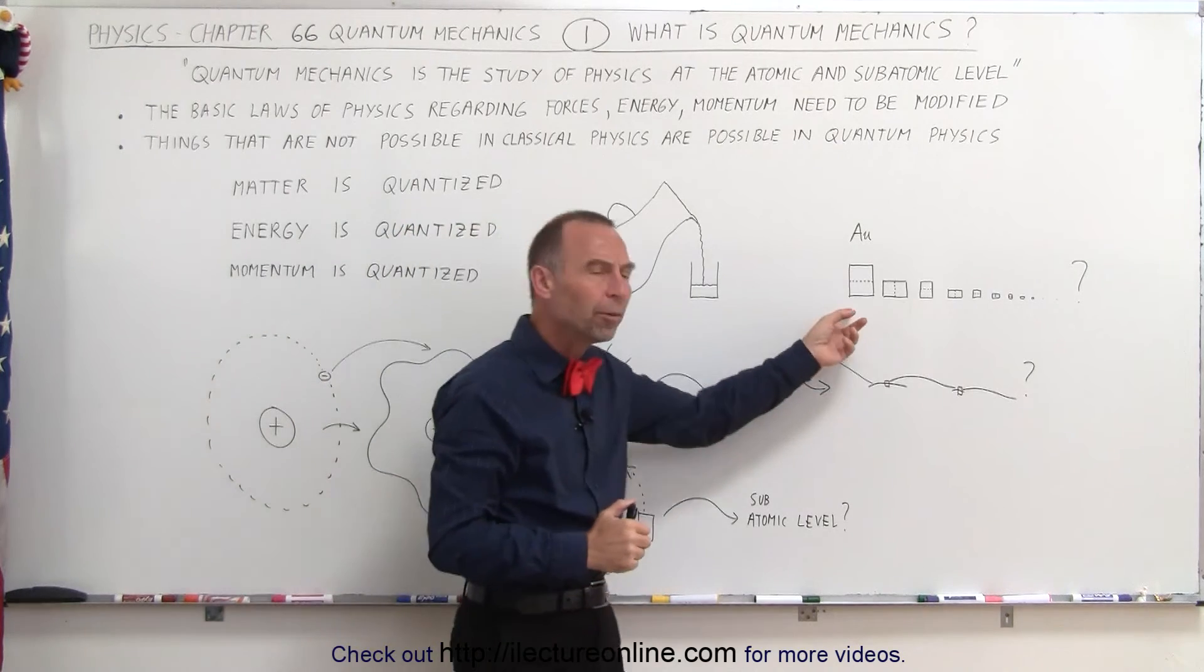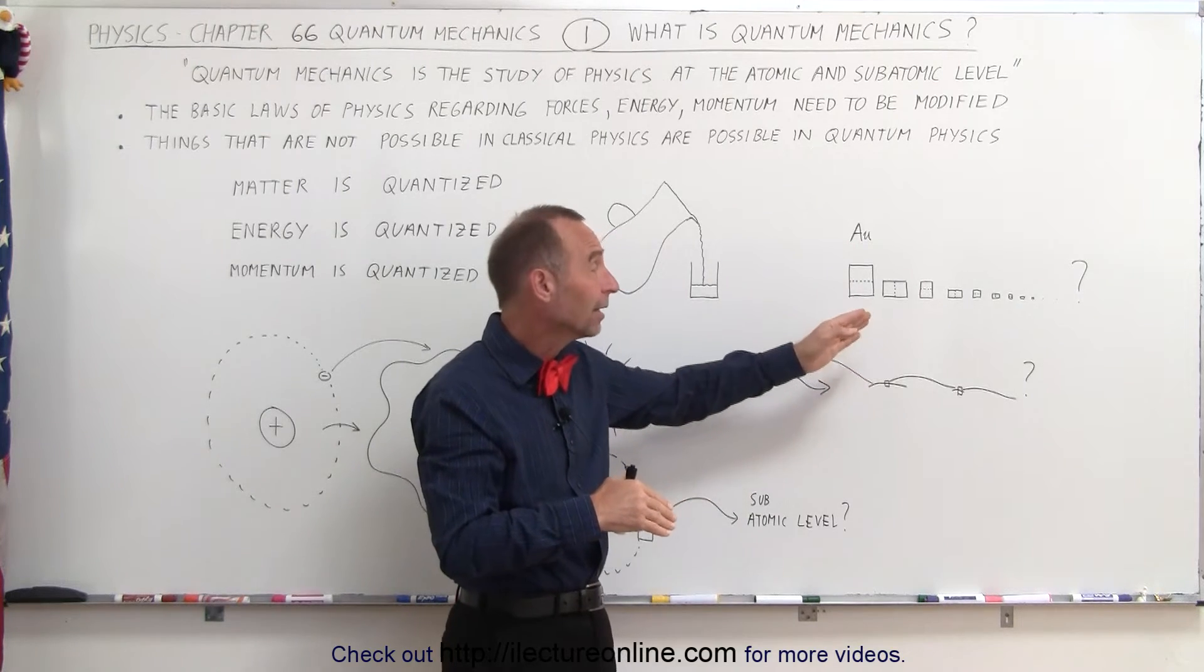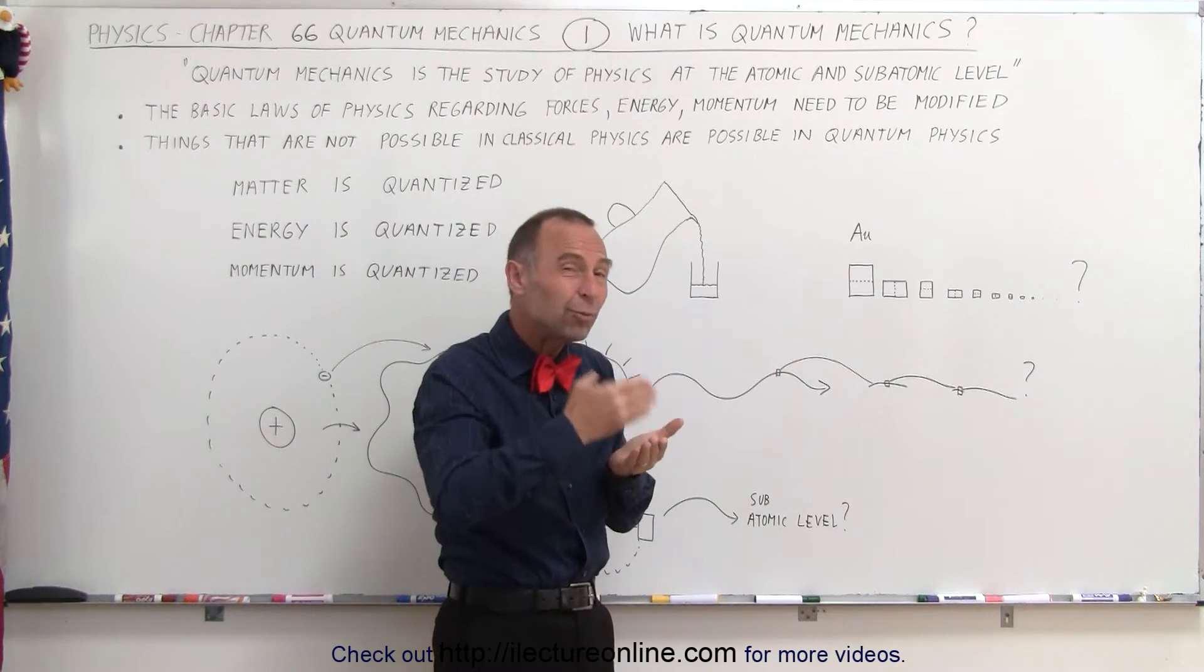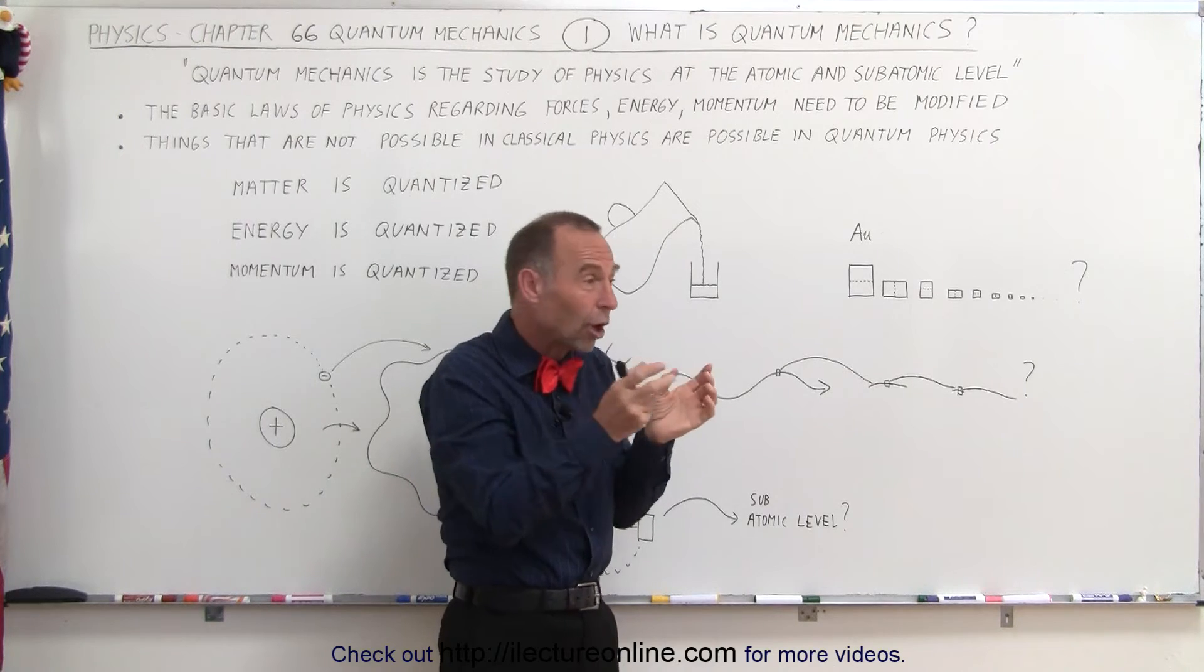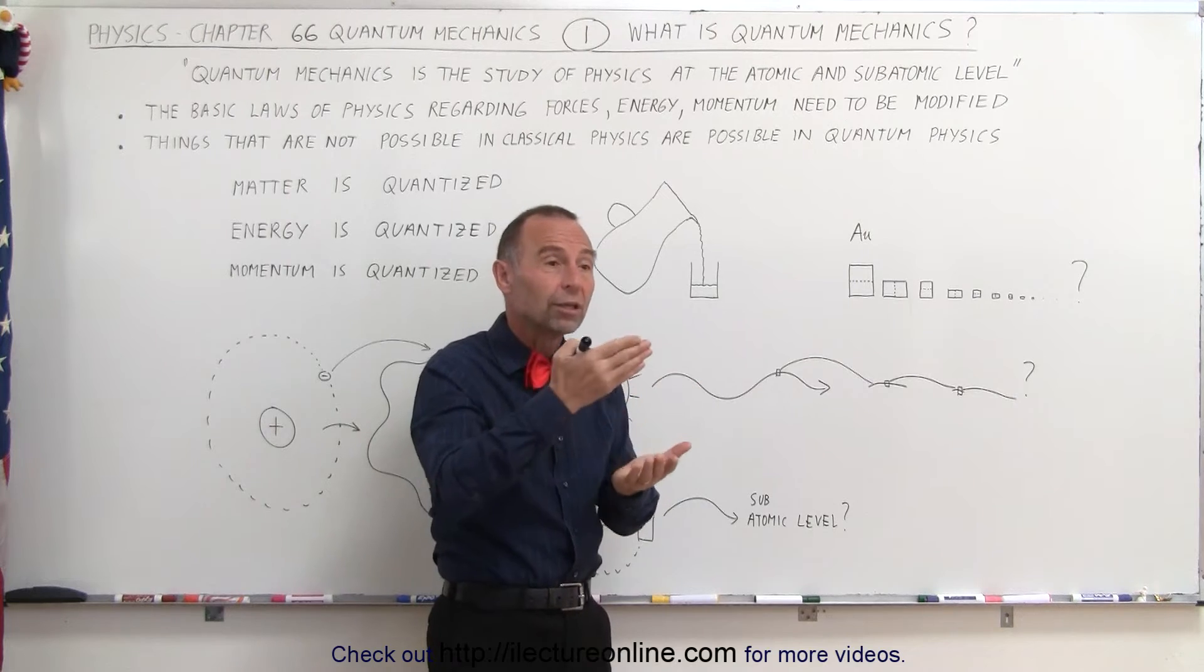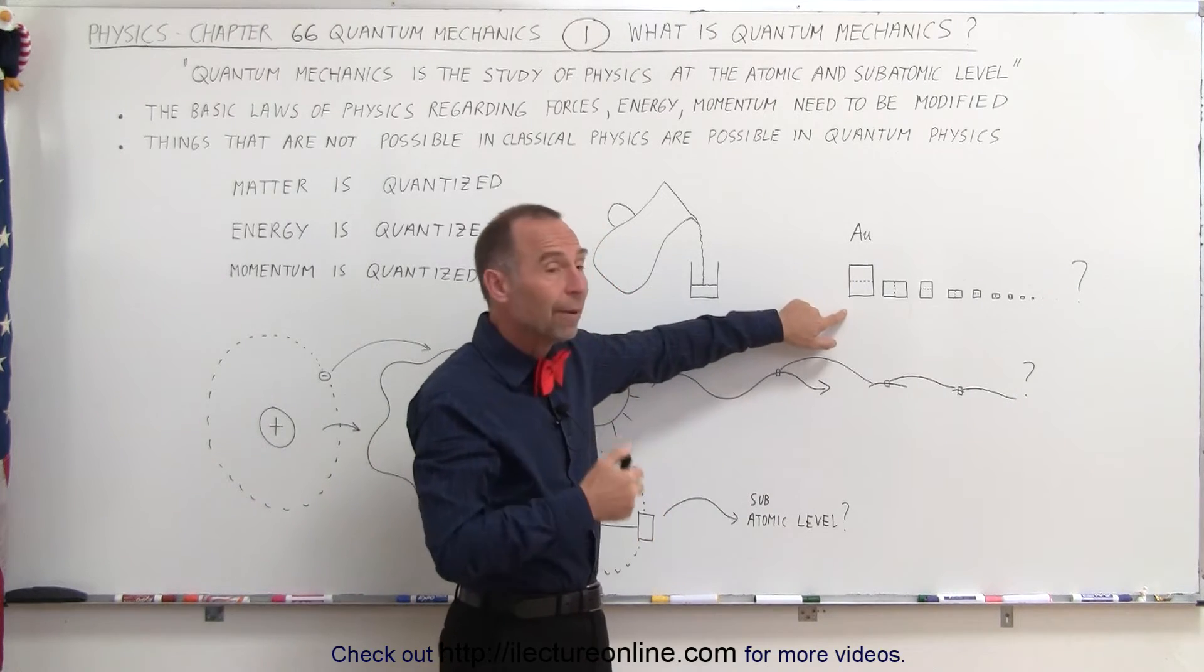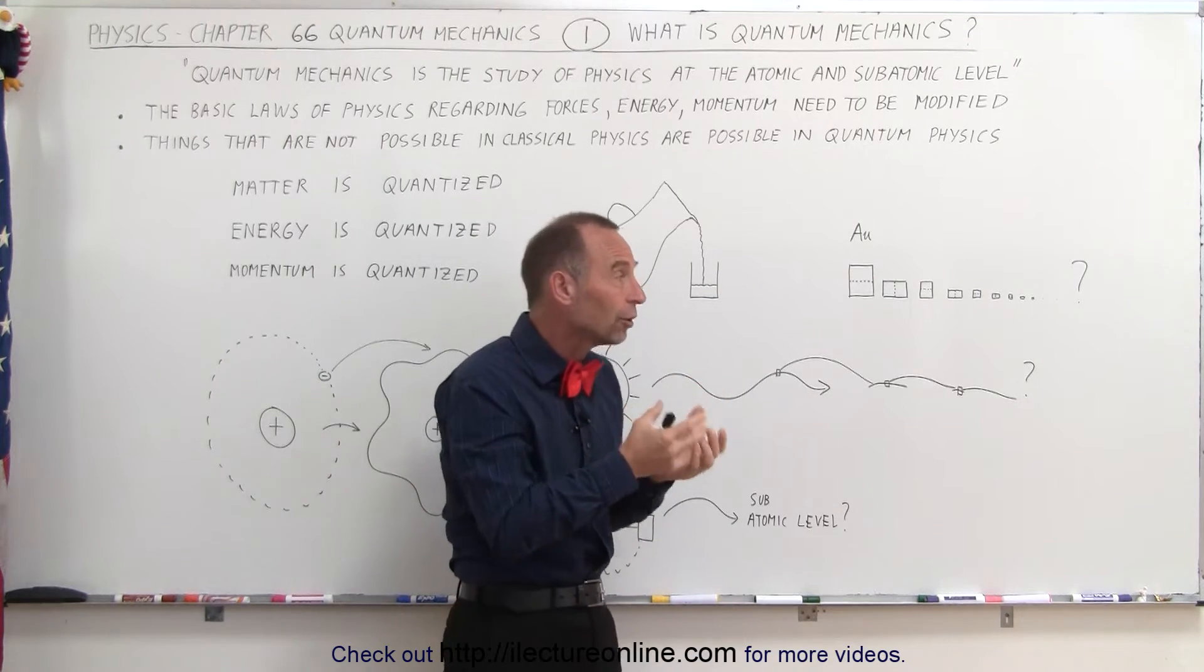What happens when we take a small piece of gold and we divide it in half? And then we divide it in half again, and we divide it in half, and we just keep doing that. Well, is there a point at which it's no longer a piece of gold that has all the properties of gold? The, for example, the density of gold and the shininess of the color of gold and so forth.